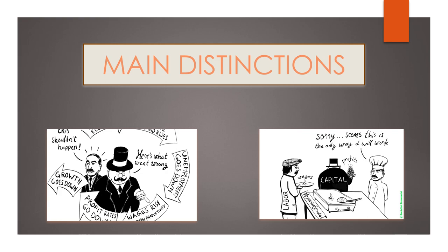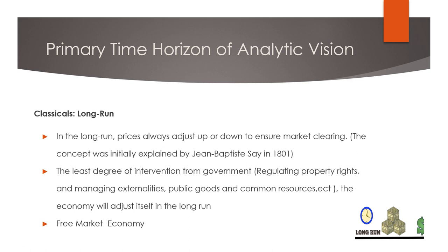Let's speak about some main distinctions between those two schools. The first is the primary time horizon of analytic vision. For the Classicals, they base their assumptions on the long run. In the long run, prices always adjust up or down to ensure market clearing. The concept was initially explained by the classical economist Jean-Baptiste Say in 1801. The least degree of intervention from government — such as regulating property rights and managing externalities like public goods and common resources — is required, as the economy will adjust itself in the long run.